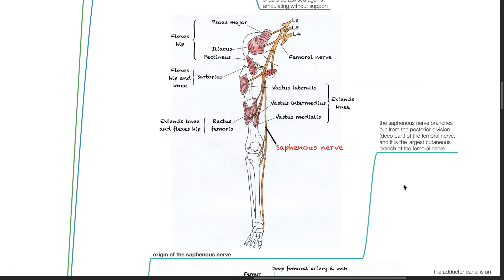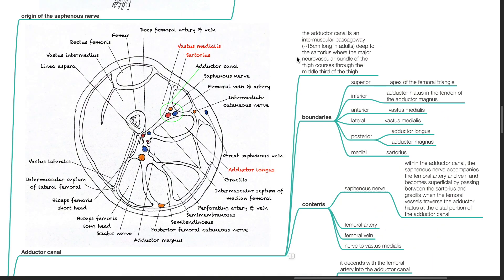The saphenous nerve branches from the posterior division, deep part of the femoral nerve, and is the largest cutaneous branch of the femoral nerve. It lies in the adductor canal, which is an intermuscular passageway approximately 15 cm long in adults, deep to the sartorius muscle, where the major neurovascular bundle of the thigh courses through the middle third of the thigh.